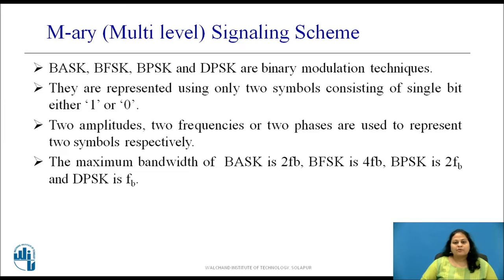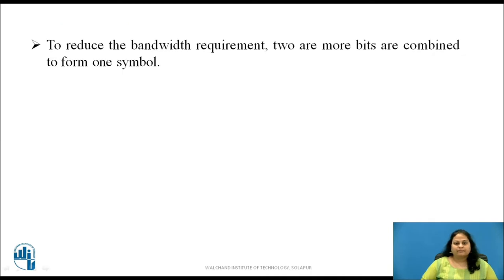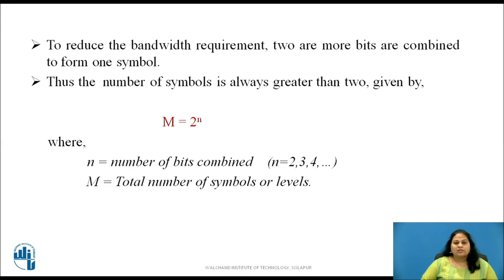The maximum bandwidth requirement of BASK is twice FB, BFSK is 4FB, BPSK is twice FB, and DPSK is FB. In order to reduce the bandwidth requirement, two or more bits are combined and transmitted as one symbol. The number of symbols in this case is always greater than 2, expressed as M equal to 2 raised to N.